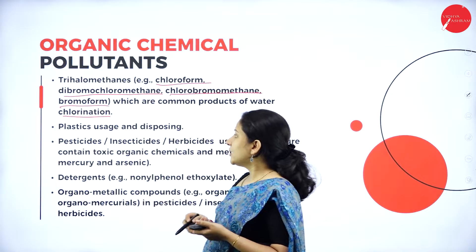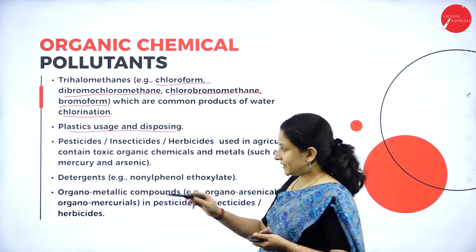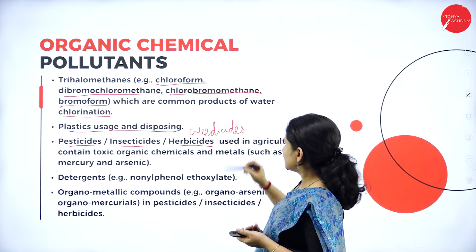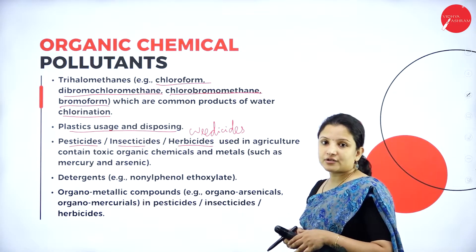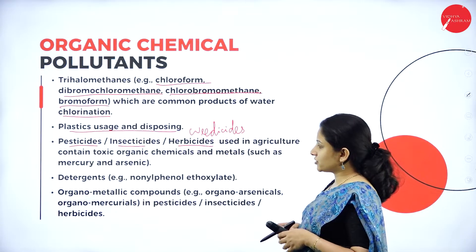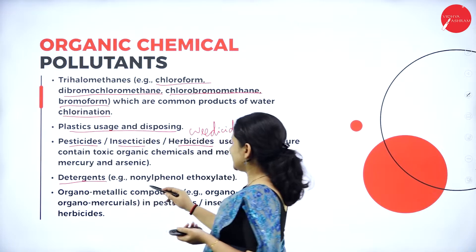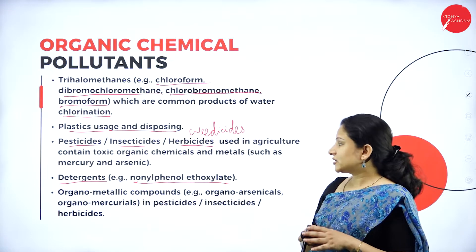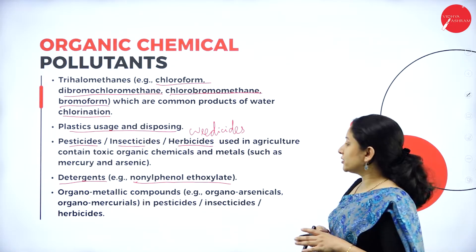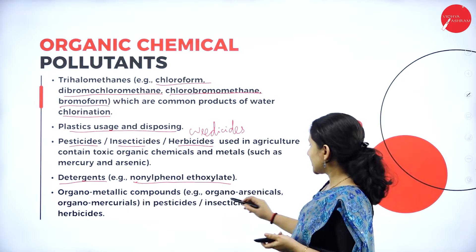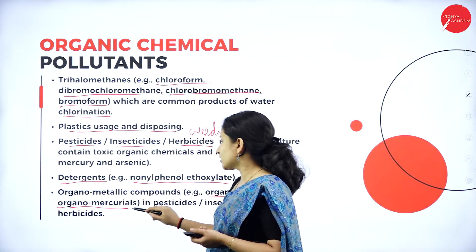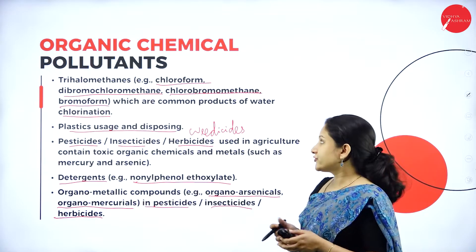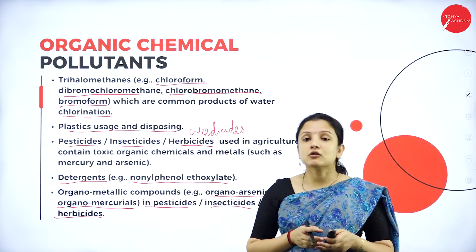Plastic usage and disposal also contribute to chemical pollution. The use of pesticides, insecticides, and herbicides — weedicides used to kill weeds in agricultural farms — contain toxic organic chemicals that cause chemical pollution. Detergents such as nonylphenol ethoxylate and those containing lipases can also cause chemical pollution. Organometallic compounds such as organo-arsenicals and organomercurials, commonly used in pesticides, insecticides, and herbicides for agricultural purposes, also cause chemical pollution. These are the different organic chemical pollutants.